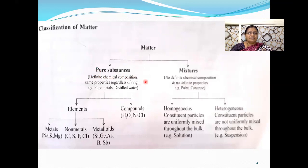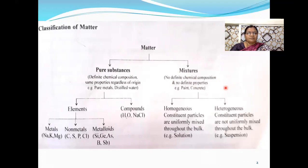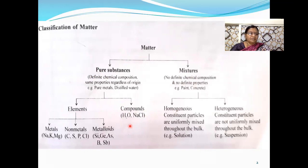Pure substances have the same type of particles. Mixtures have no definite chemical composition and no definite properties. For example, paint and concrete. Pure substances are further classified into two types: elements and compounds. Elements are further classified as metals, non-metals, and metalloids depending upon their characteristics.